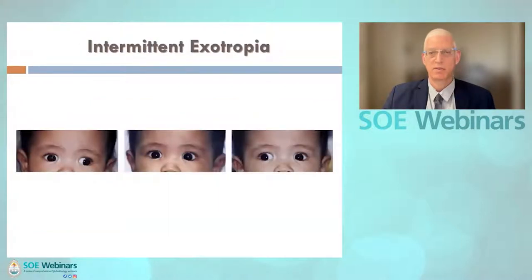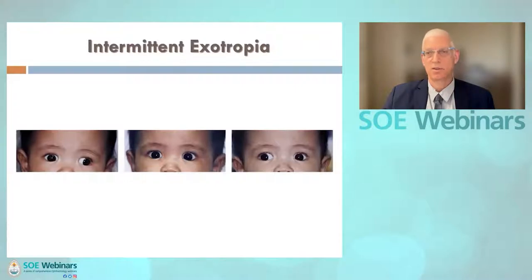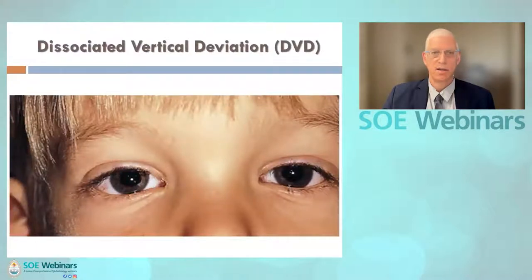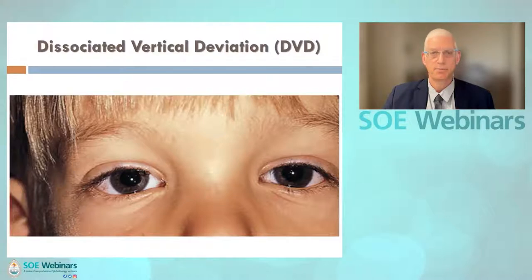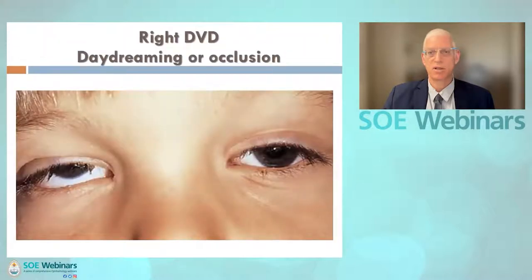A subclass of accommodative esotropia involves children with a high accommodation to convergence ratio — they have more esotropia at near. Bifocals or progressive addition lenses will eliminate the esotropia at near. The unaware parent will report that the child has intermittent strabismus when taking off glasses, especially when looking up close. The classical example of intermittent strabismus is intermittent exotropia that alternates between the right and left eyes. Some cases may improve over time or stay stable, while others deteriorate to a constant exotropia needing surgery. The exotropia is mostly seen when the child daydreams, becomes tired, or is exposed to bright daylight.